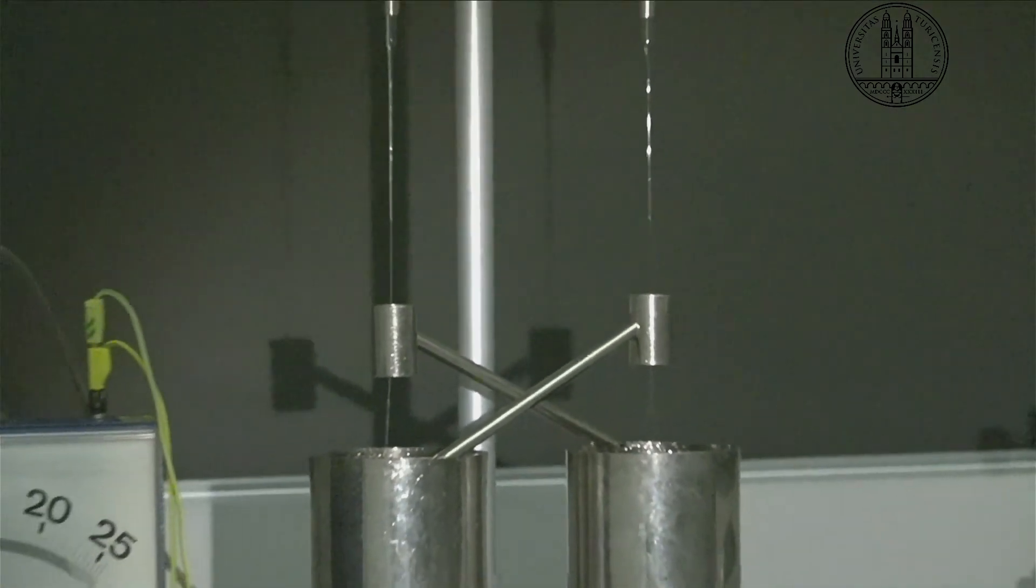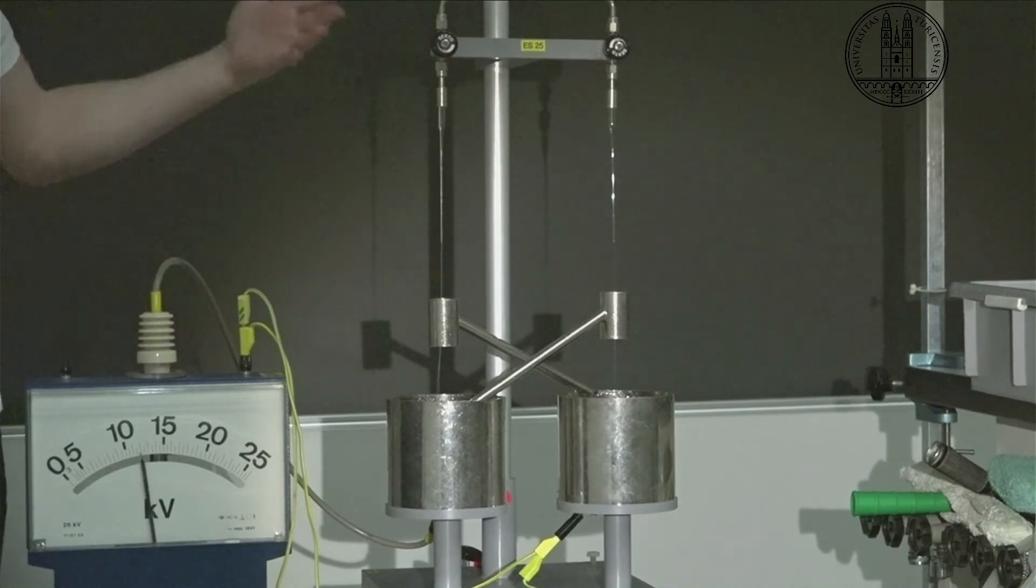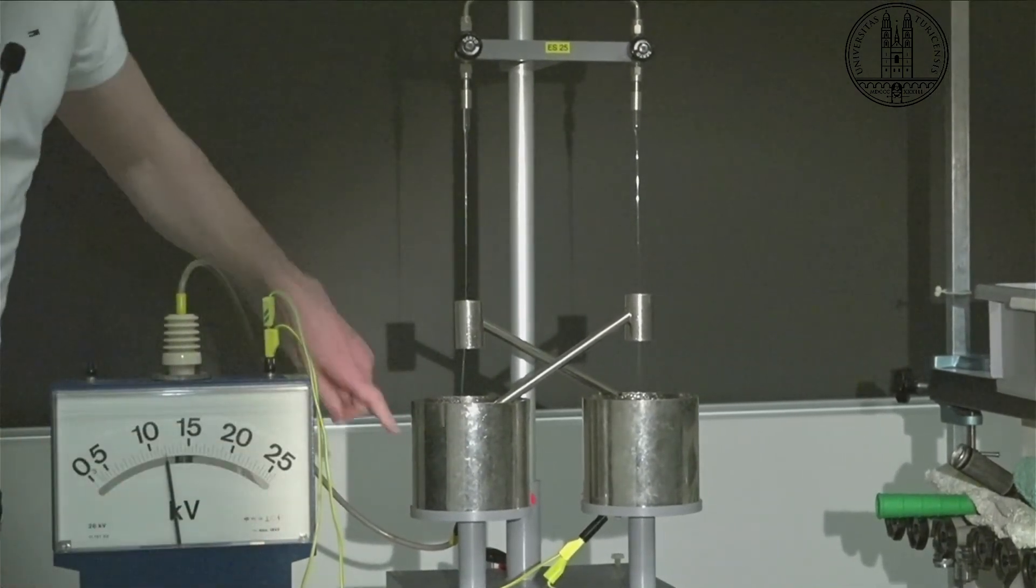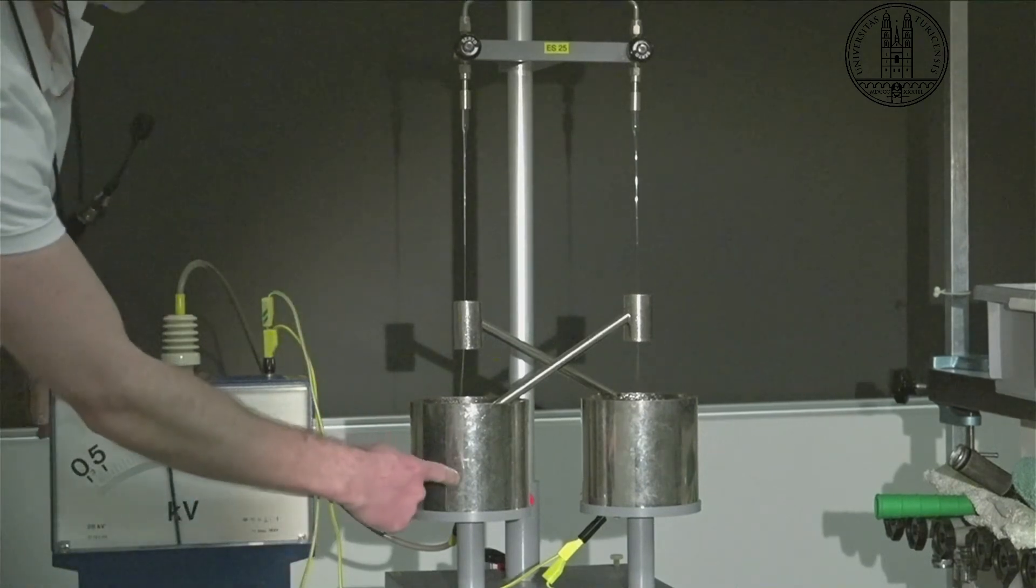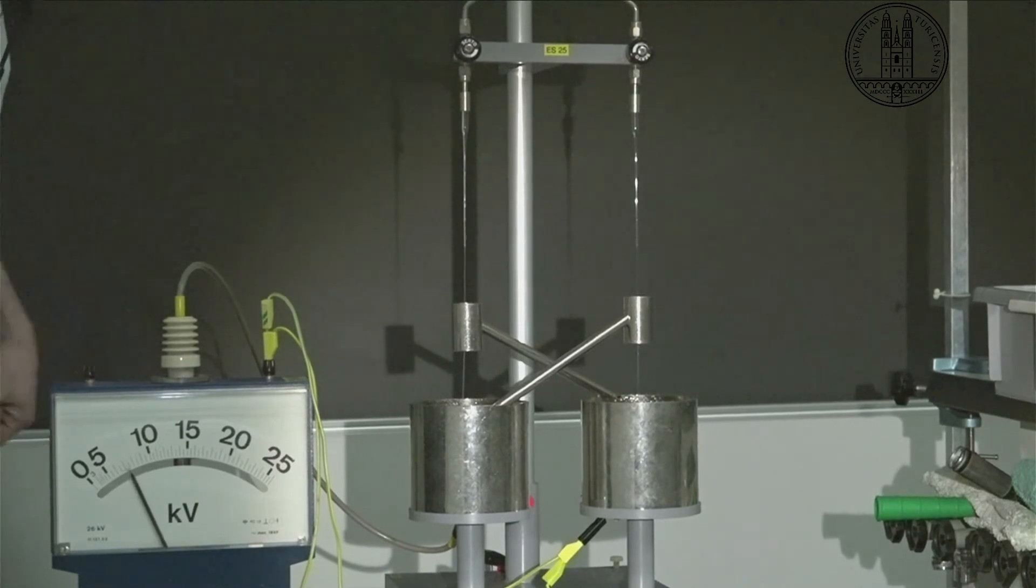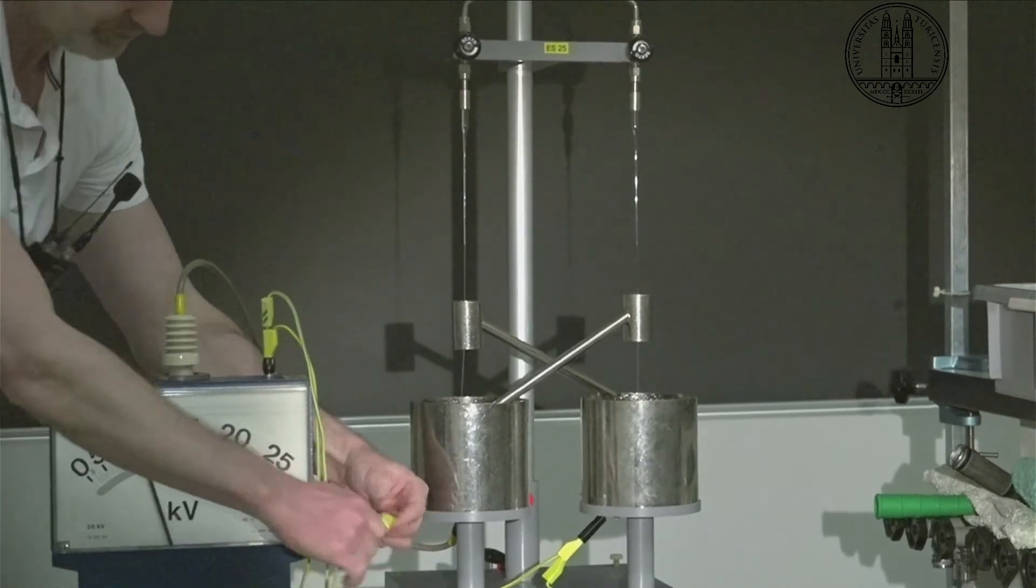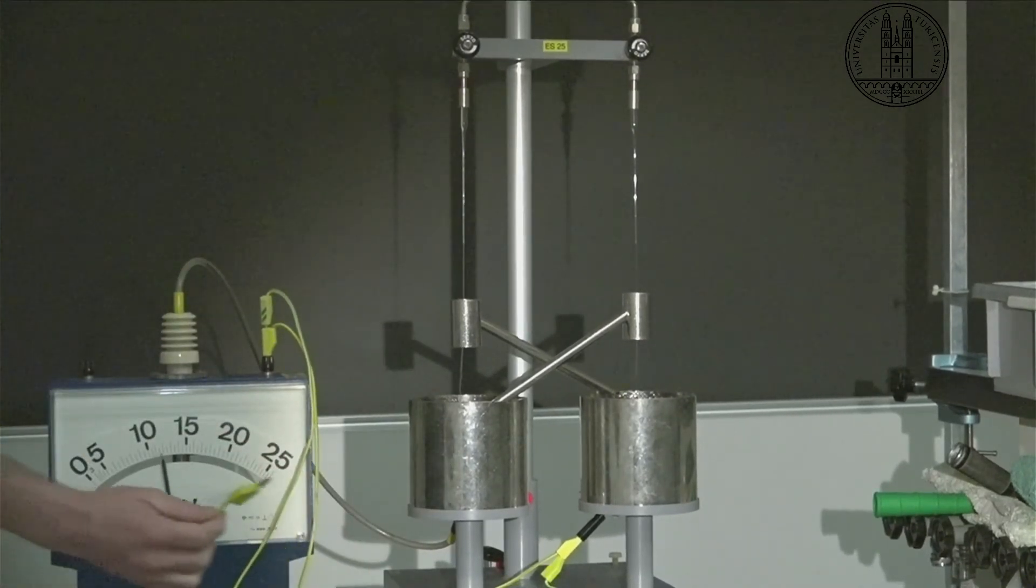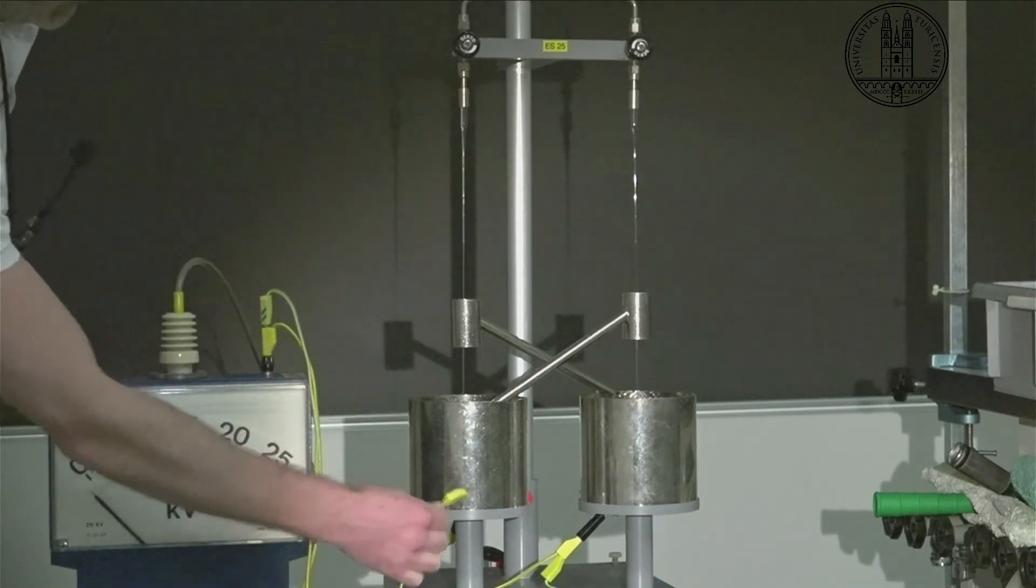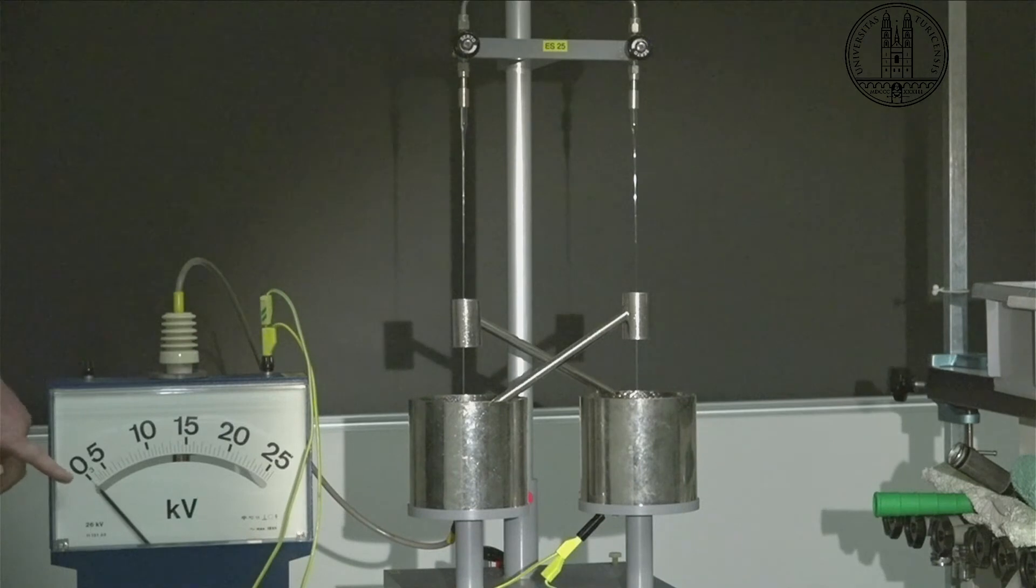And so somehow, using the principles of physics, we have generated our potential difference. And there's not a lot of electrical current here. So, for instance, I can touch this. Okay, I do get zapped, but it's not too bad. It's probably better to use this grounding line here. And that sets this thing back down to zero.